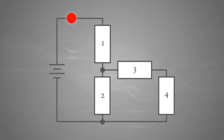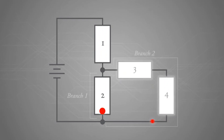Let's take a closer look at how electrical currents travel in this simulation. This simulation contains four loads. There are two parallel branches. Branch one contains load two, and branch two contains load three and four.